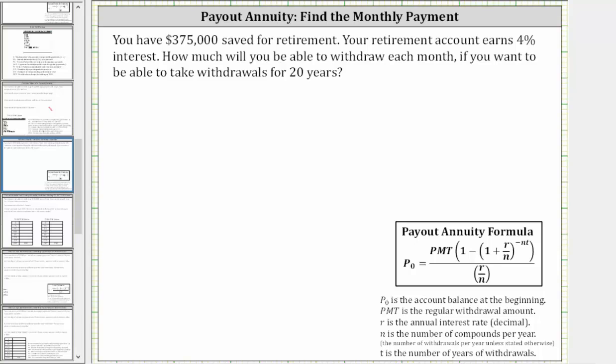You have $375,000 saved for retirement. Your retirement account earns 4% interest. How much will you be able to withdraw each month if you want to be able to take withdrawals for 20 years?